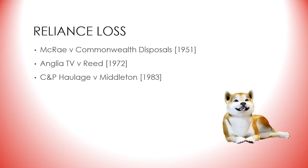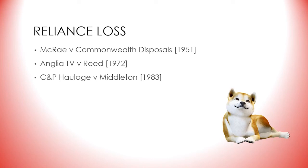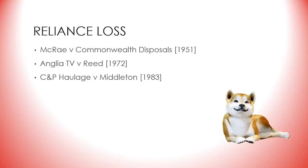McRae could not find the ship because it was not where the commission said it was. In this case the claimant could not prove what he lost from the breach, because there was no way to tell how much value lay in the tanker. So the only things left to claim were the money paid for the rights to the non-existing tanker and the expenses in mounting the salvage expedition.